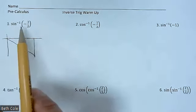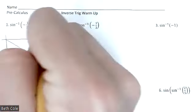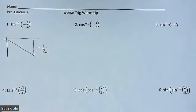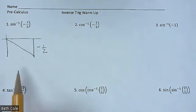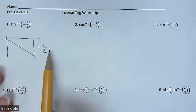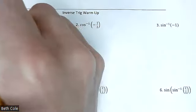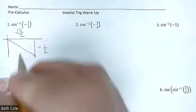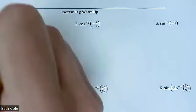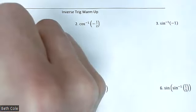Sine is the y value, so that negative one half goes where the y value goes. It's just backwards — you have the side and you're looking for the angle, instead of being given the angle and looking for the side. So what's your angle that goes across from one half? This side will be square root of three over two, but I'm looking for the angle. Pi over six.